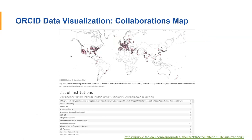One example is some data visualization resources we have that look at publication data from ORCID records, co-author information from DOI metadata, and then maps all of that out. What you're seeing here is a map of all of the researchers that have co-authored publications with researchers from Caltech, for example. If you're interested in doing an investigation like this or seeing a visualization like this for your institution, let us know.